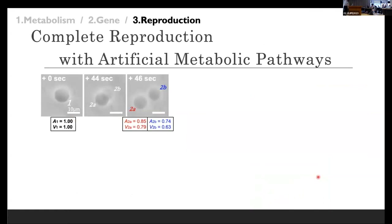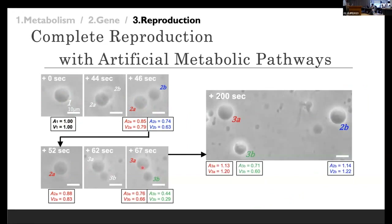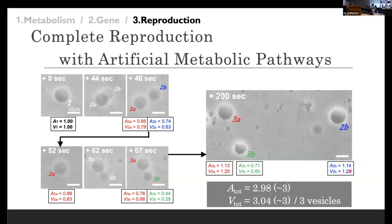Finally, this is the main result. I integrated all the physical reproduction processes and all the chemical processes into a single system. This is the initial mother vesicles — A represents surface area and V represents volume. In response to the supply of food molecules, the initial mother vesicles show spontaneous growth and division. This left vesicle again showed growth and division. Waiting some seconds, these daughter vesicles and granddaughter vesicles recover their volume to the initial size of their mother vesicles. This is spontaneously triggered by the supply of food molecules. This is my synthetic minimal cell system.